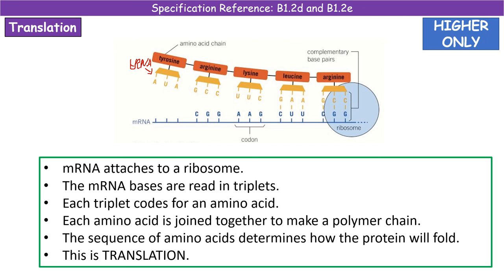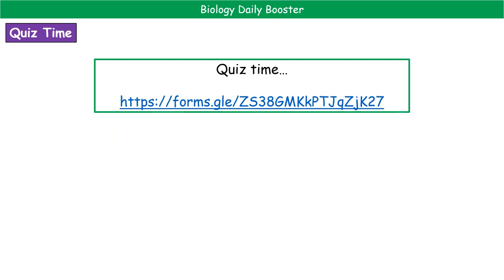So translation is where we're reading the mRNA sequence in those triplet codes, joining the complementary amino acids through the use of tRNA. As always, the final thing to do is to go and check your knowledge on our quiz — the link is in the description below. Don't forget to come back tomorrow for the next Daily Booster to help boost your knowledge before those exams.